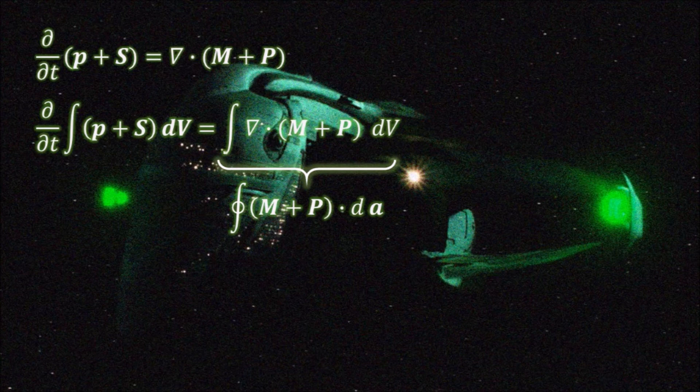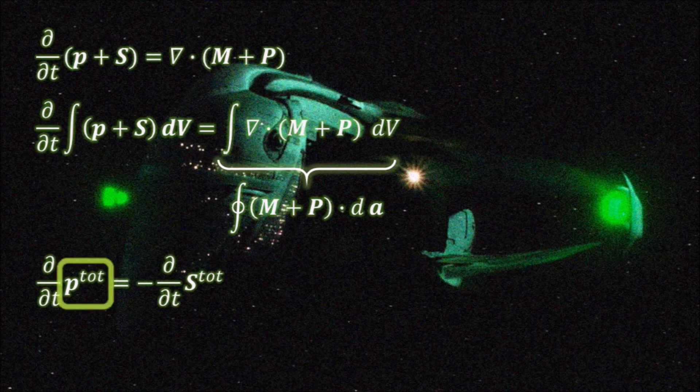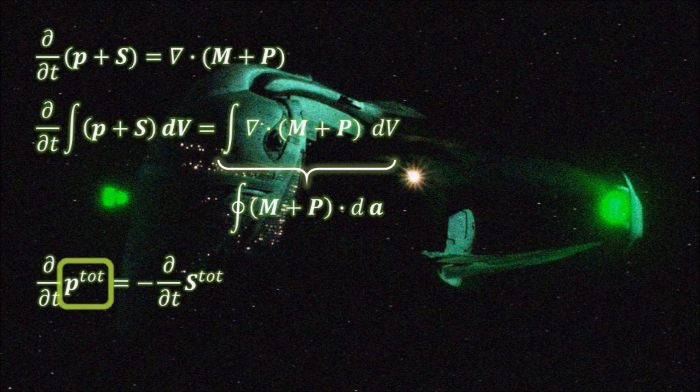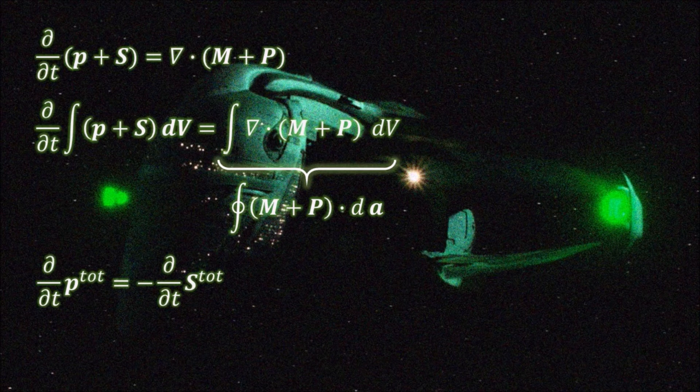If we take this volume, we end up with this relation, which says that the rate of change of the total momentum of the charges is equal and opposite to the rate of change of the totality of this thing.